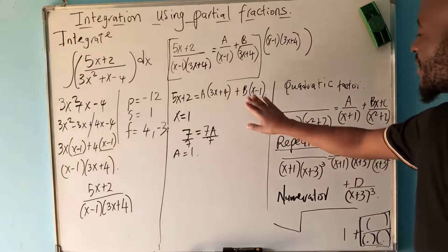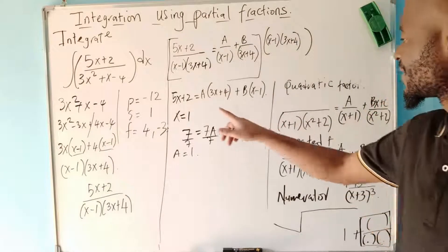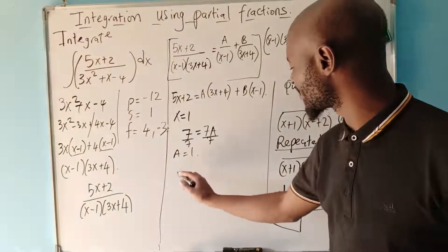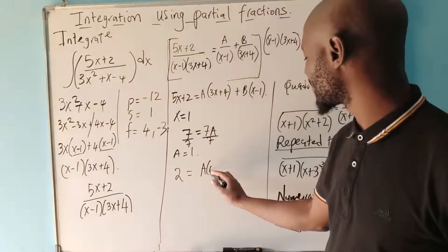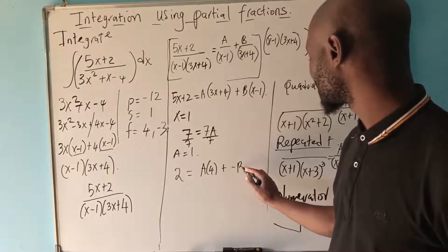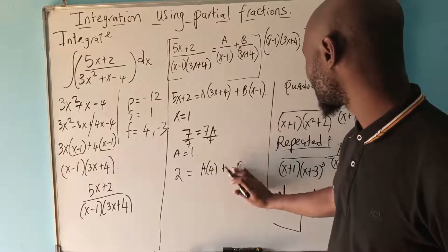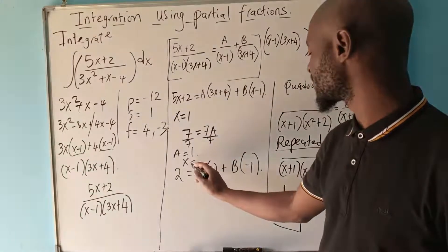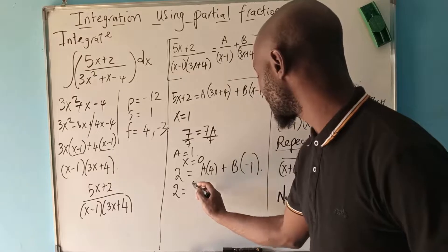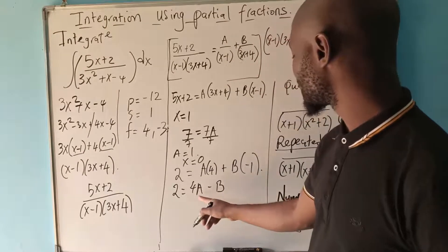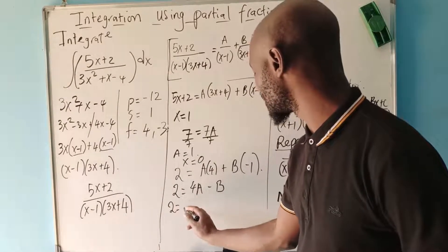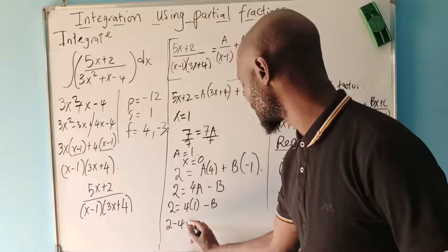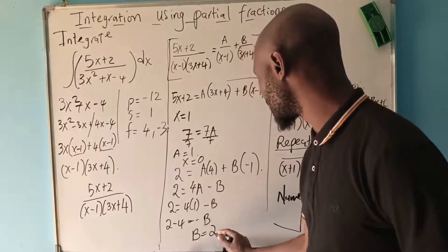Now we need to find B. We let x equal 0 to come up with an equation. When x is 0, we get 2 equals A times 4 plus B times negative 1, which gives 2 equals 4a minus b. Since we know A equals 1, we substitute: 2 equals 4 times 1 minus b, so 2 minus 4 equals negative b, meaning B equals 2.